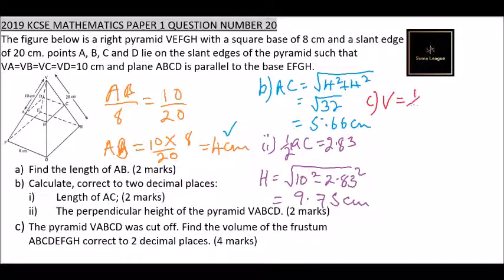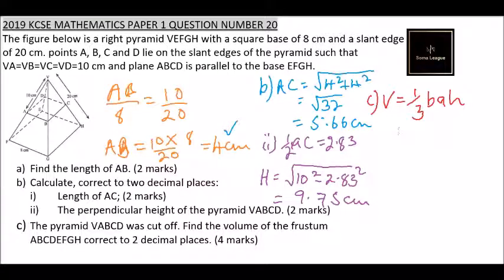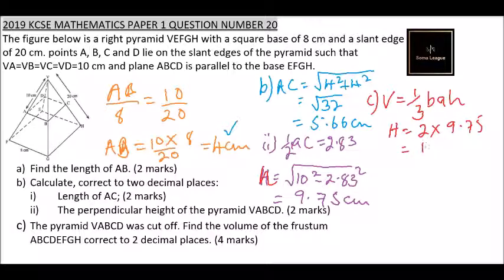The volume of a pyramid is base area times height. First we need the height of the whole pyramid. The height of the small pyramid is 9.75 centimeters, so the height of the full pyramid is 2 multiplied by 9.75, which gives 19.50 centimeters.